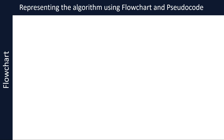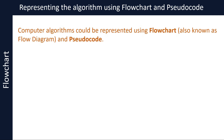We will take a look at representing algorithms using flowcharts, also known as flow diagrams, in this first video of the two-part video presentation about flowcharts and pseudocode. We saw that algorithms could be expressed as written descriptions in the algorithms video. Computer algorithms could also be represented using two other formats called flowchart or flow diagram and pseudocode. We will take a look at pseudocode in part 2.